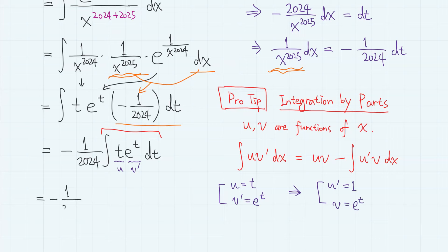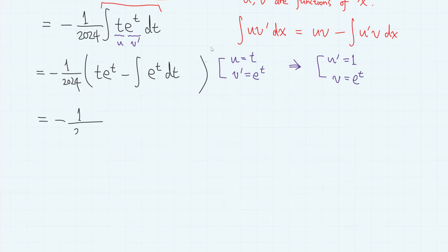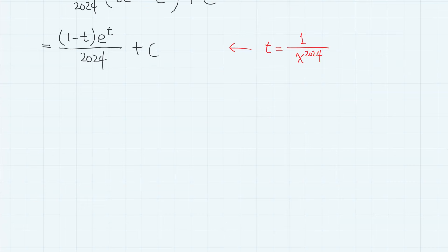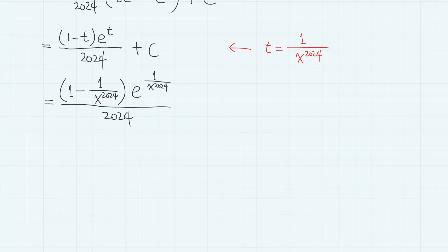Then we have u prime equal to 1 and v equals e to the power of t. So we have minus 1 over 2024 times uv — that is t e to the power of t — minus the integral of u prime v, which is e to the power of t dt. This gives minus 1 over 2024 times (t e to the power of t minus e to the power of t) plus constant c, which we write as (1 minus t) times e to the power of t divided by 2024 plus c.